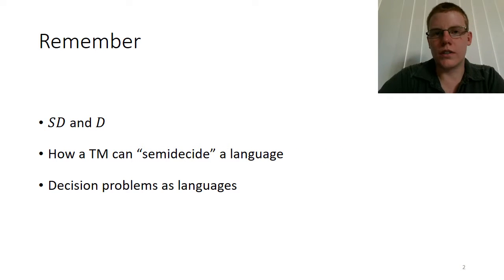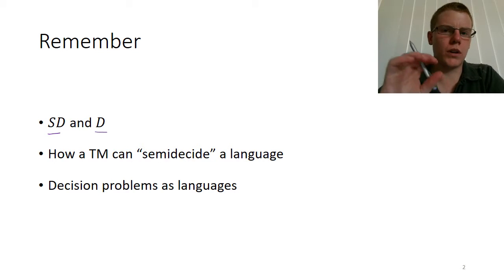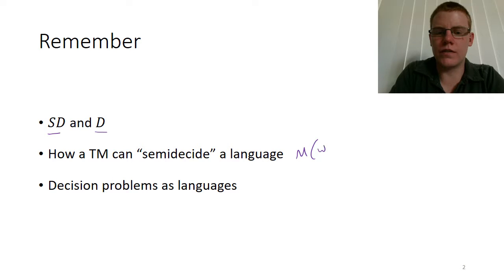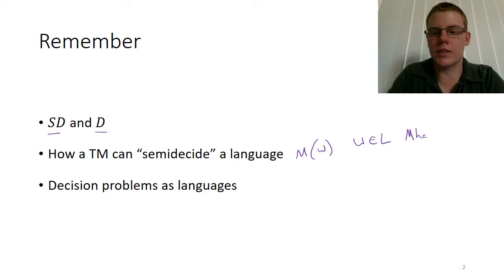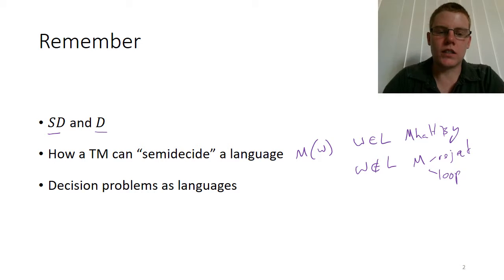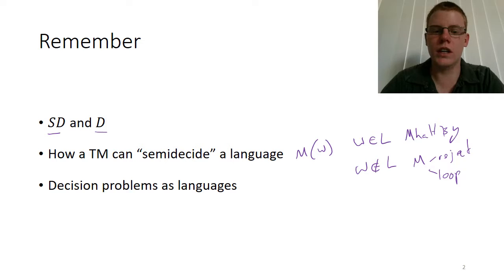I need you to remember what the sets SD and D are — the set of semi-decidable and decidable languages. Remember what it means for a Turing machine to semi-decide a language: if a machine is given a string that is in the language, then the Turing machine must halt and accept. But if the string is not in the language, then M can either reject or just loop forever. It is slightly less strict than deciding a language, where the machine must always halt and say either yes or no.